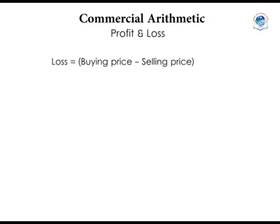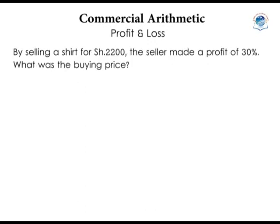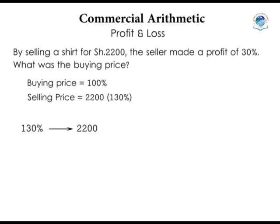Often, profit and loss are expressed as percentages, where the buying price equals 100%. For example: by selling a shirt for 2,200 shillings, a seller makes a profit of 30%. What was the buying price? The buying price = 100%, so the selling price = 100% + 30% = 130%. Since 130% = 2,200 shillings, then 100% = (100/130) × 2,200 = 1,692.30 shillings.